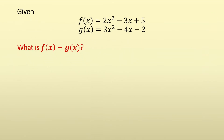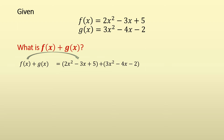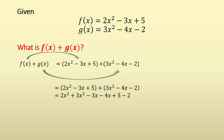Let's have an example for addition. Given f(x) = 2x² − 3x + 5 and g(x) = 3x² − 4x − 2, what is f(x) + g(x)? We state that f(x) + g(x) = (2x² − 3x + 5) + (3x² − 4x − 2). Combining like terms: 2x² + 3x² = 5x², −3x − 4x = −7x, and 5 − 2 = 3. So f(x) + g(x) = 5x² − 7x + 3.